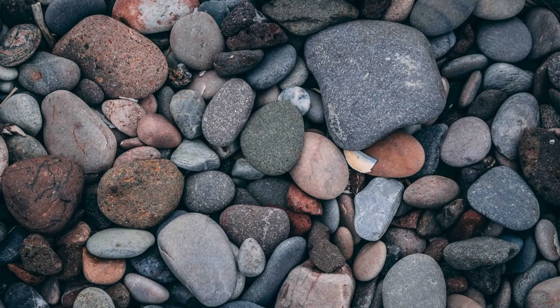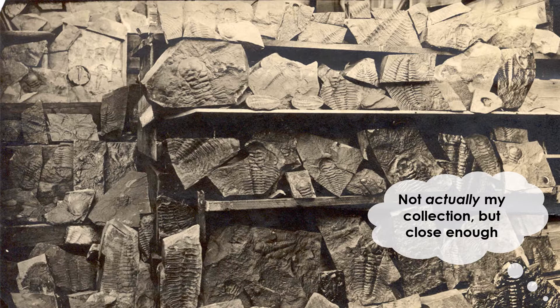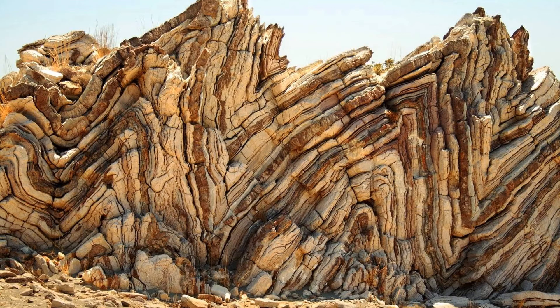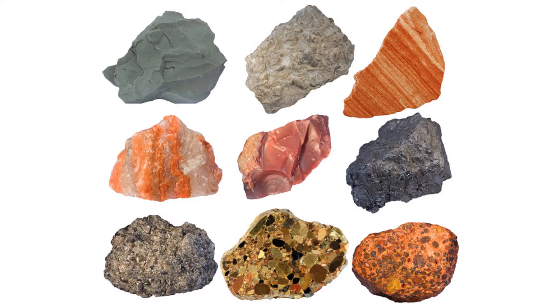Whatever the case may be, it's safe to say that I've always been very interested in the diversity of rocks out there. Fast forward to today, and my collection has grown considerably — it now takes up a few rooms in my office and has grown to include not just rocks but also minerals, fossils, and sediment samples too. But what differences do we actually see when we look closely at rocks? Why do these differences exist, and where do all the rocks on Earth actually come from?